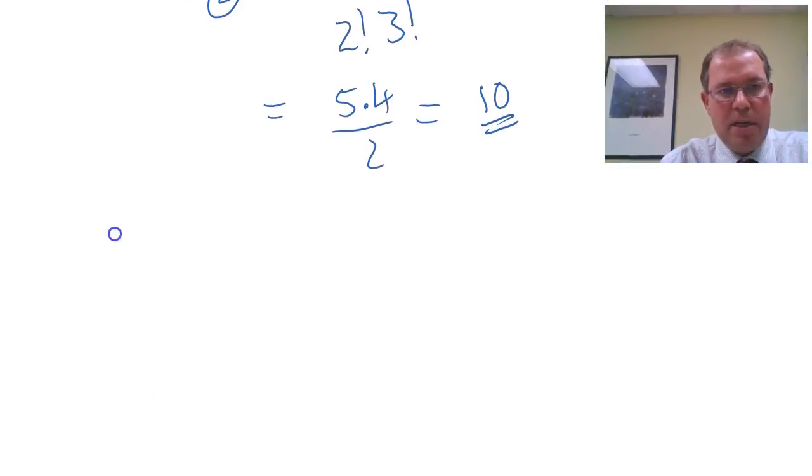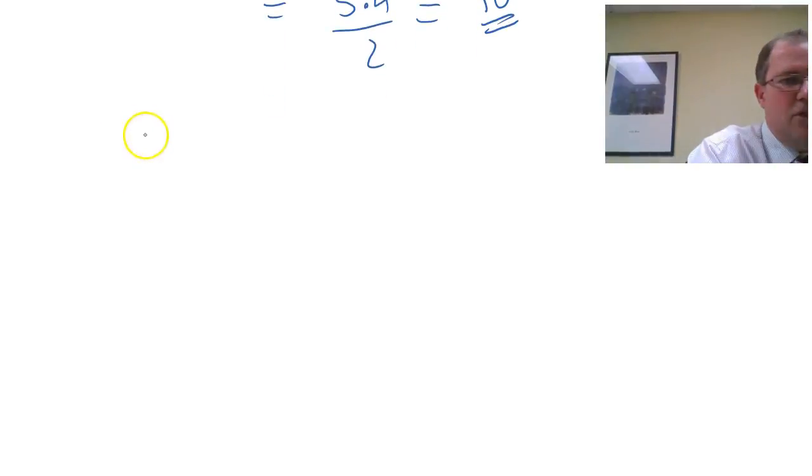Now let's try another one. Let's try 7 choose 4. If we do 7 choose 4, imagine all your a's and b's are different, they're not, but let's imagine. So this is if you're expanding a plus b to the 7.